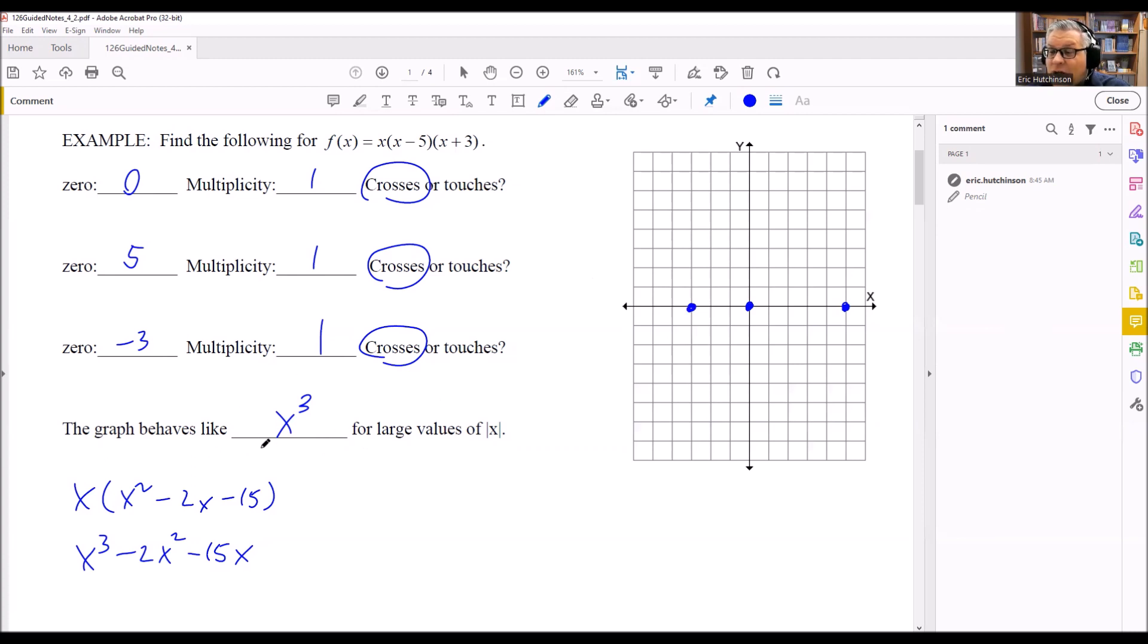This is saying that the graph behaves like x cubed. Now the x cubed graph, what that does, here's what the normal x cubed graph looks like. It looks like this.